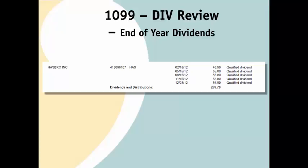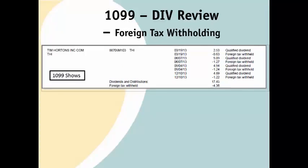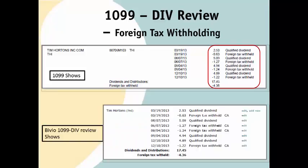Some other things you might find on 1099 DIVs that require adjustments: sometimes an end-of-year dividend is received and entered in Bivio with a date early in the new year, but on the 1099 it is classified as a prior-year dividend. If you see this, you need to adjust the date the dividend was received so it is reported in the correct tax year. If you own foreign stocks, you may see entries where foreign tax was withheld on your 1099 — make sure these entries also show up on the Bivio 1099 DIV Review page.